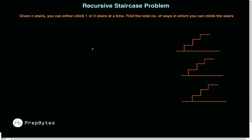Before that, let's understand the problem statement. The problem says: given N stairs, you can climb either one or two stairs at a time. Find the total number of ways in which you can climb the stairs. Let me give you an example.